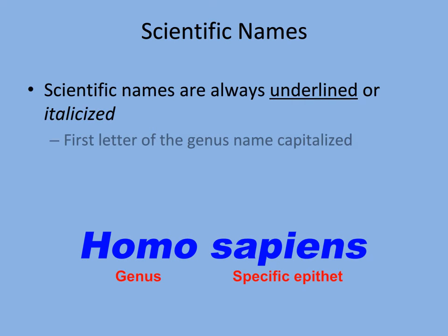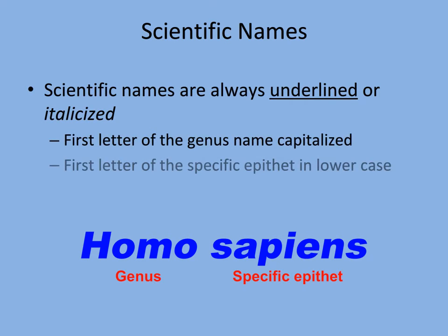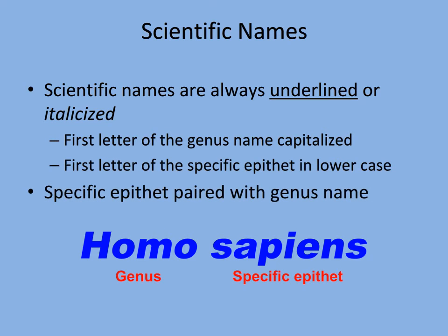Scientific names must be written in a certain way so we know it is a species and not just some random Latin words. If typing, we must italicize both the genus and the specific epithet. If writing by hand, we must underline both. The genus must be capitalized, while the specific epithet is not. And they must be paired — if you just write 'sapiens,' this is just a Latin word that means 'wise.' You must pair it with its genus to indicate which species you are discussing. We try to be exact in science.